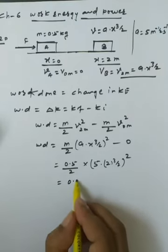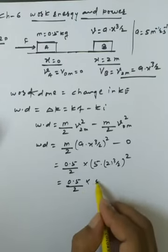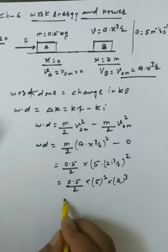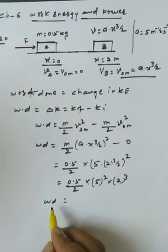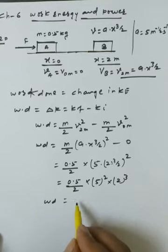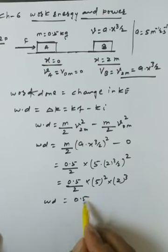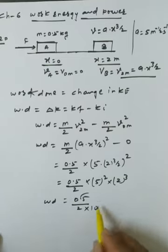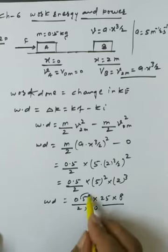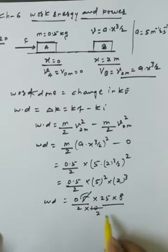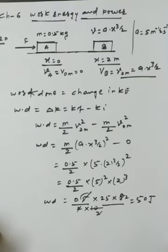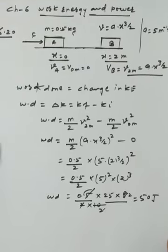Simplifying: (0.5/2) × (5)² × 2^3. Removing the decimal, we get (10/2) × 25 × 8 = 50 Joules. This is the work done for problem 6.20.